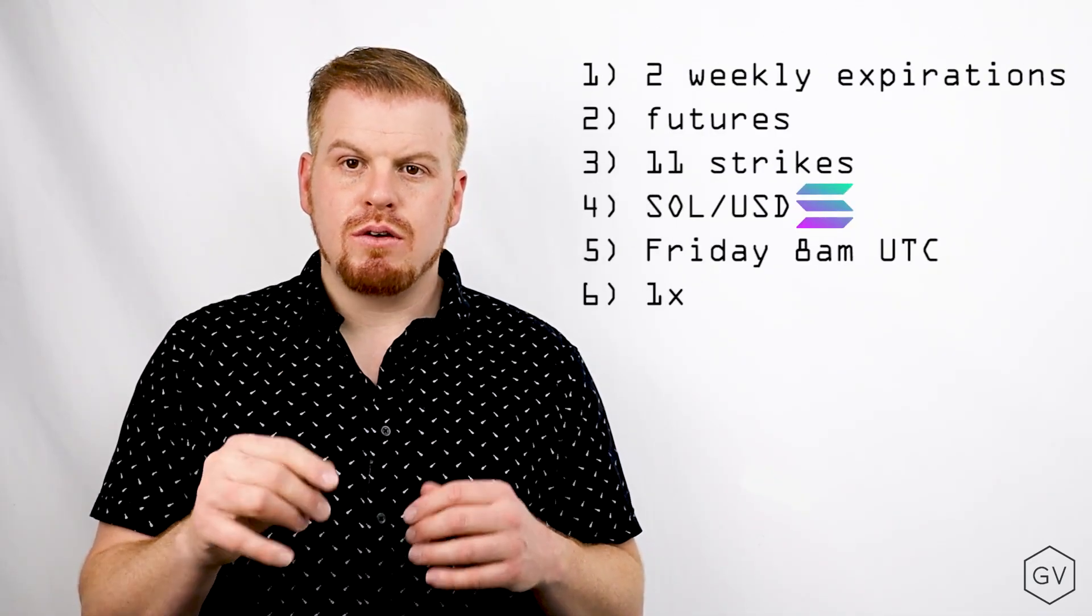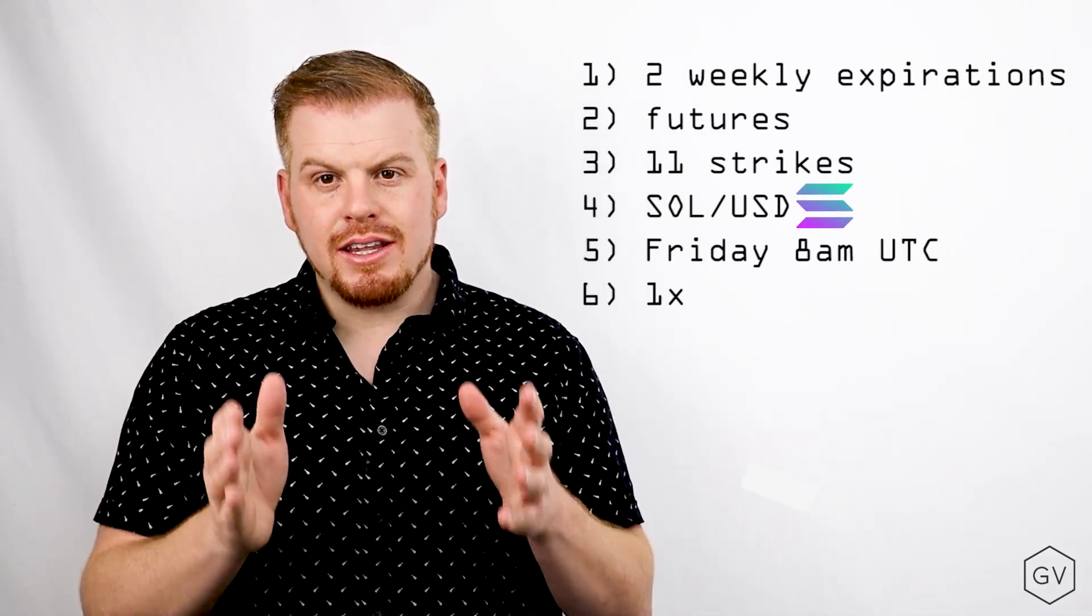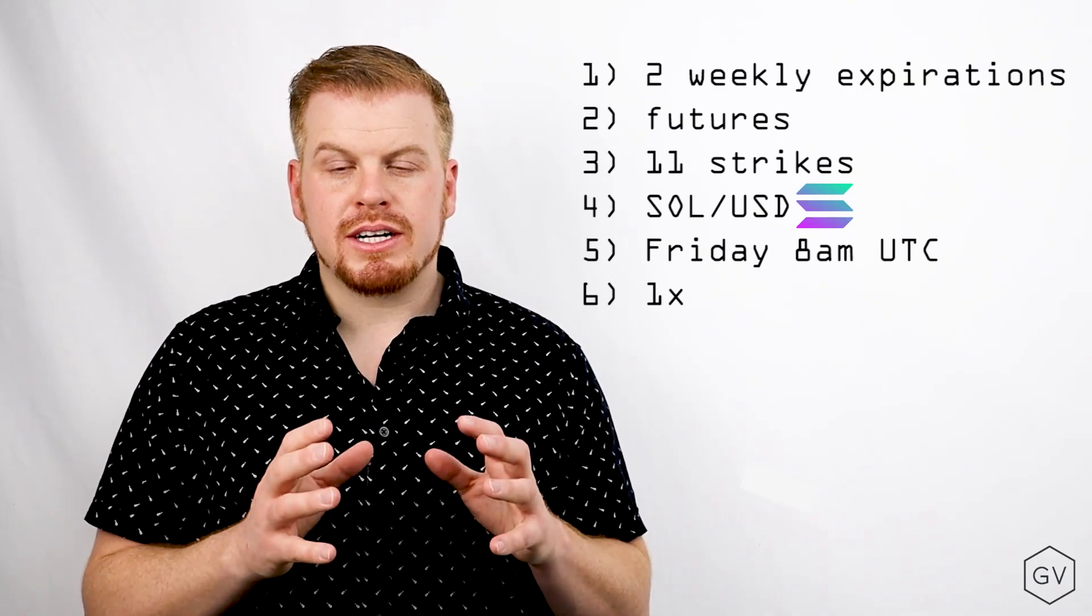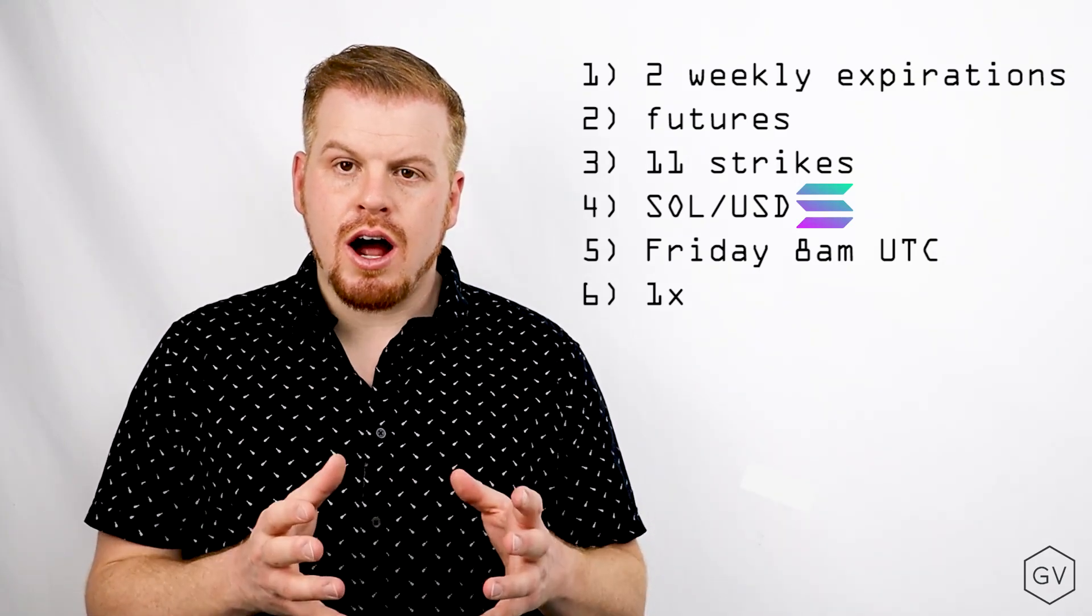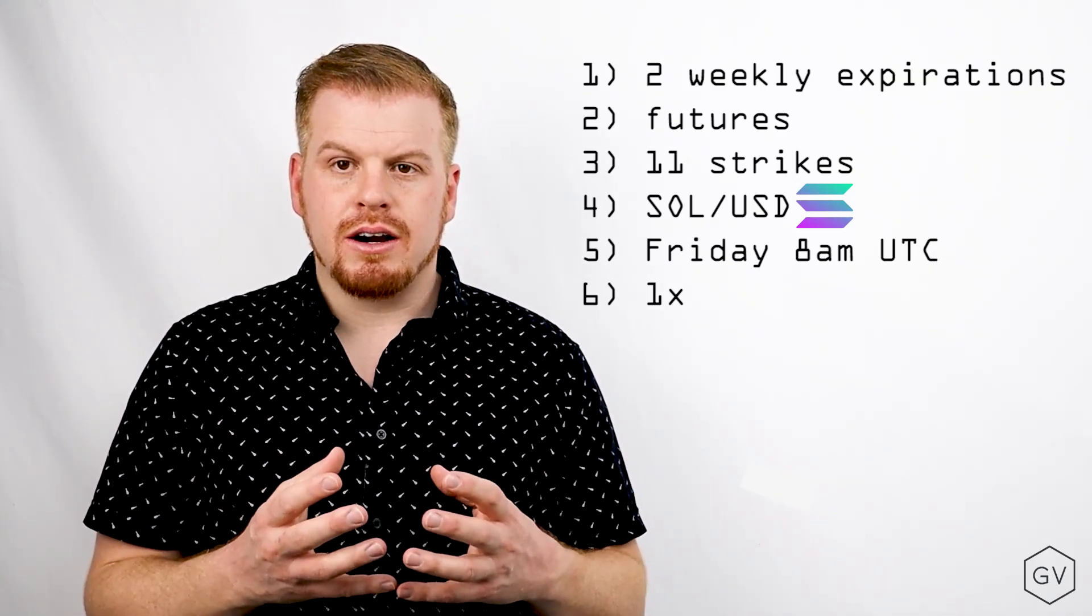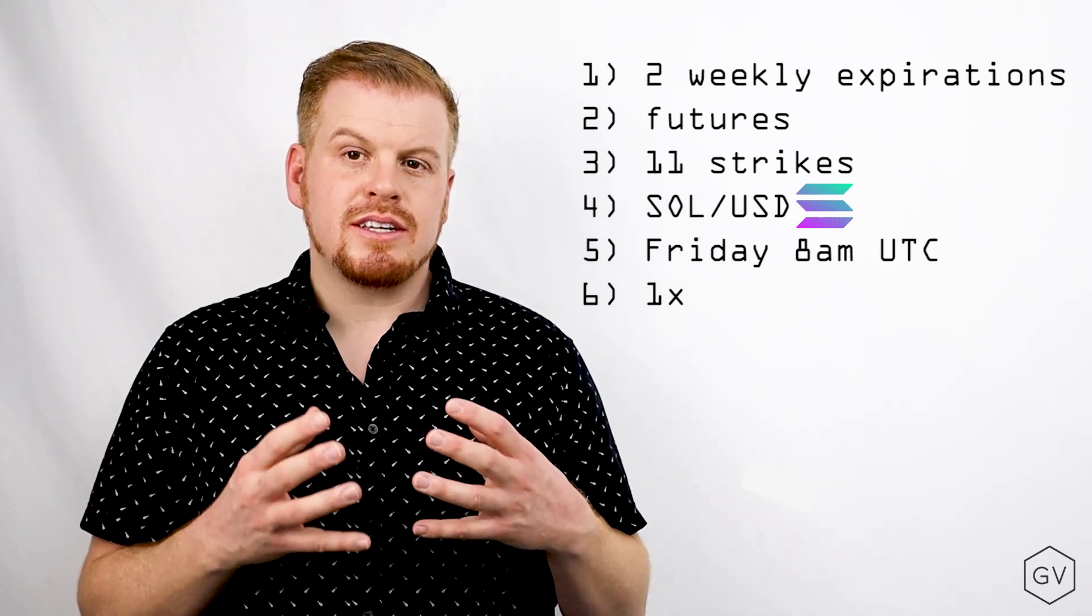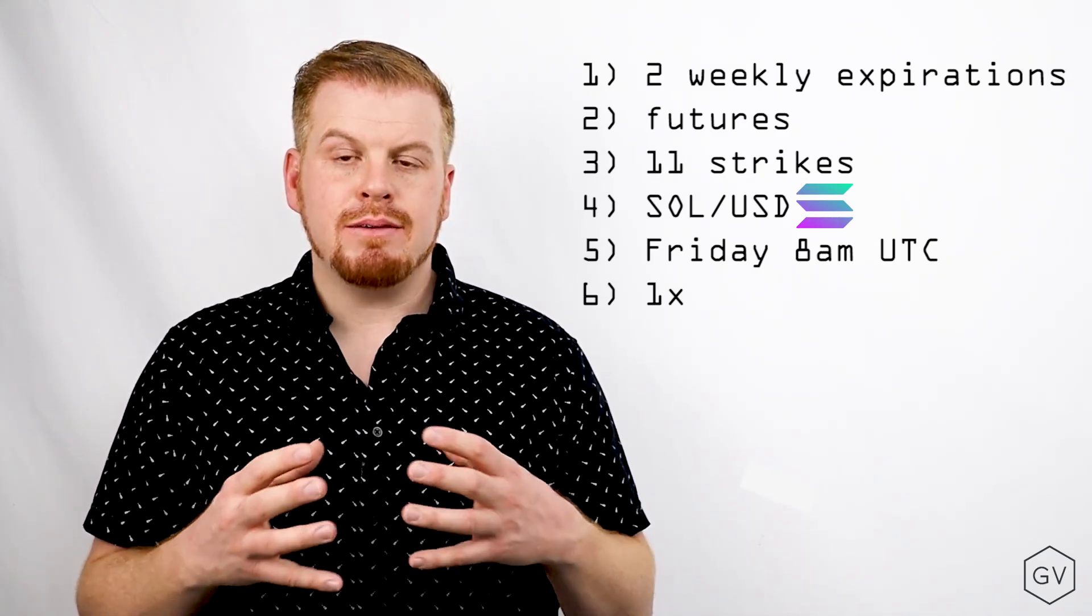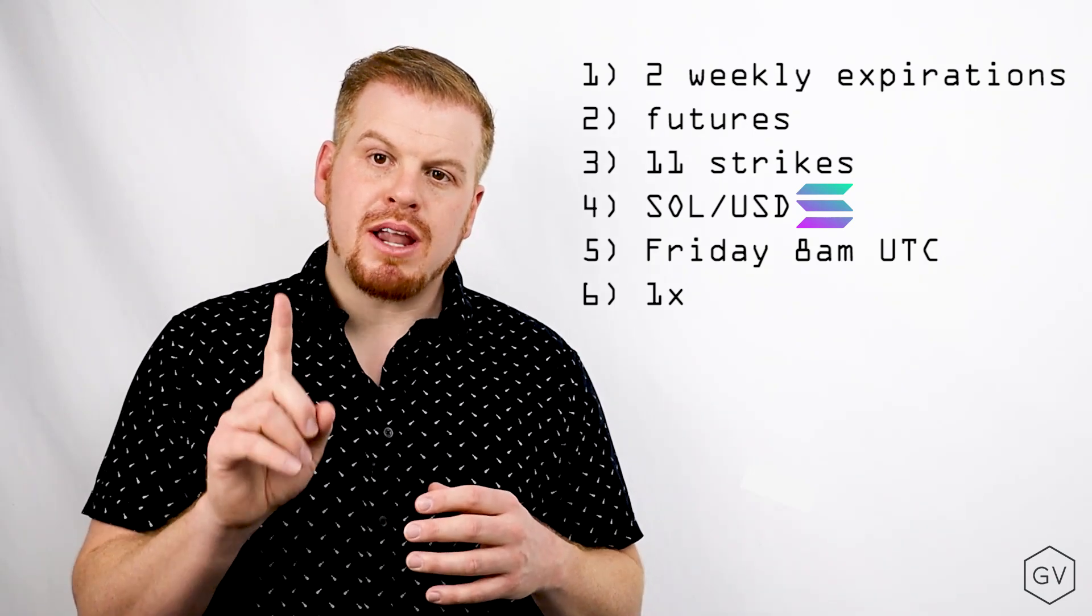On day one of the Zeta protocol launch, Zeta plans to launch two weekly expiries with matching futures, 11 strike prices per expiration on the Solana dollar price underlier. These options are set to expire on Friday 8 a.m. UTC with a multiplier of one.